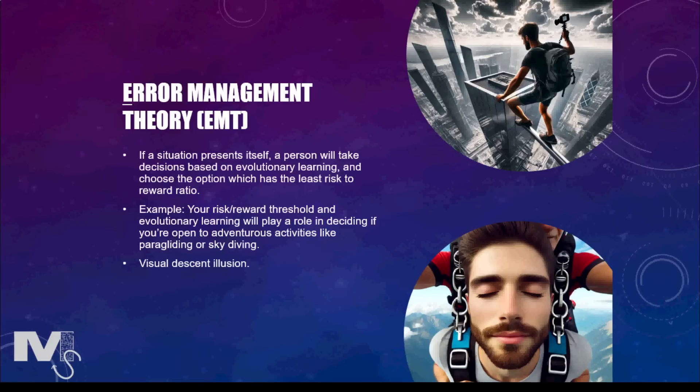The visual descent illusion dictates that when looking down, our brain is programmed to overestimate the distance between you and the ground — a deliberate mechanism built to prevent you from jumping and potentially hurting yourself. Another interesting EMT mechanism is called the auditory looming bias, which ensures that an object seems closer to you than it actually is when the sound it produces is approaching you. For example, a train moving towards you will appear much closer, to ensure that you get enough time to move away from it.